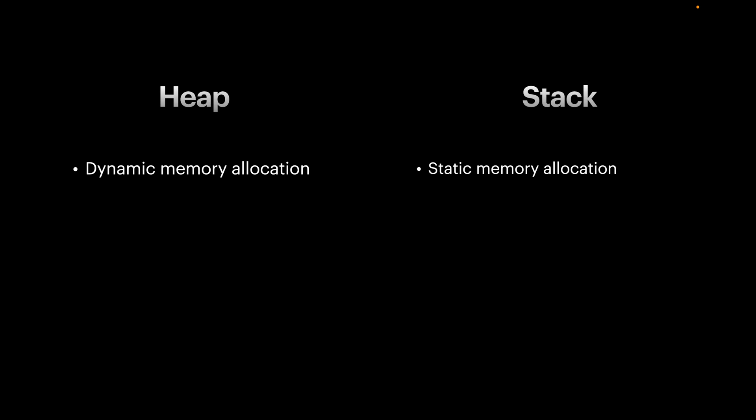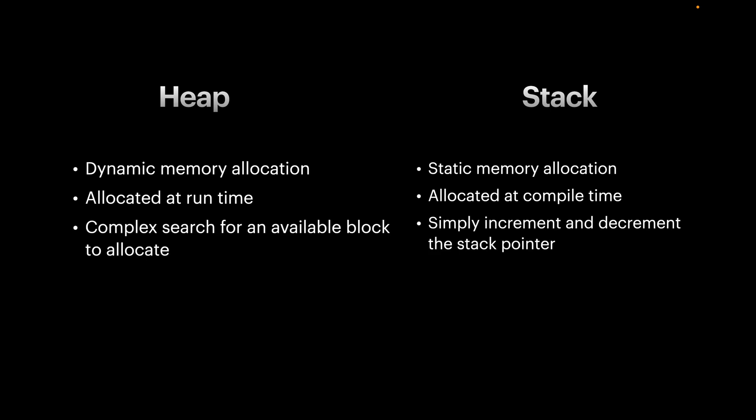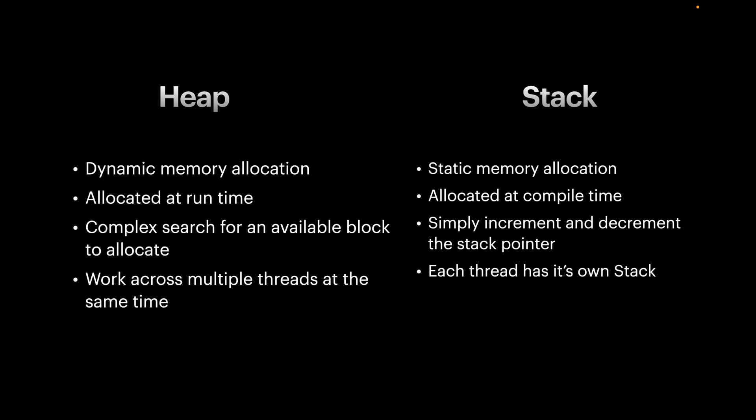Here's the summary: the heap uses dynamic memory allocation, the stack uses static memory allocation. On the heap, allocation happens at runtime; on the stack, at compile time. For allocation itself, the heap requires a complex search for an available block, while the stack simply increments and decrements the stack pointer. The heap works across multiple threads simultaneously; each thread has its own stack. The heap is a bit slower and the stack is faster.